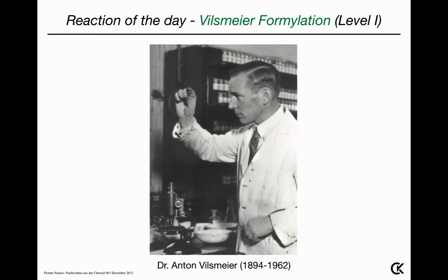This all started with Dr. Anton Vilsmeier, a German chemist who was born in 1894 in a small village close to Regensburg. Anton Vilsmeier studied chemistry at the University of Munich and then moved to Erlangen where he obtained his PhD in the group of Otto Fischer. He then worked as an assistant under the guidance of Professor Pummerer, and it was about that time that his PhD student Albrecht Haag worked on the Vilsmeier formylation.